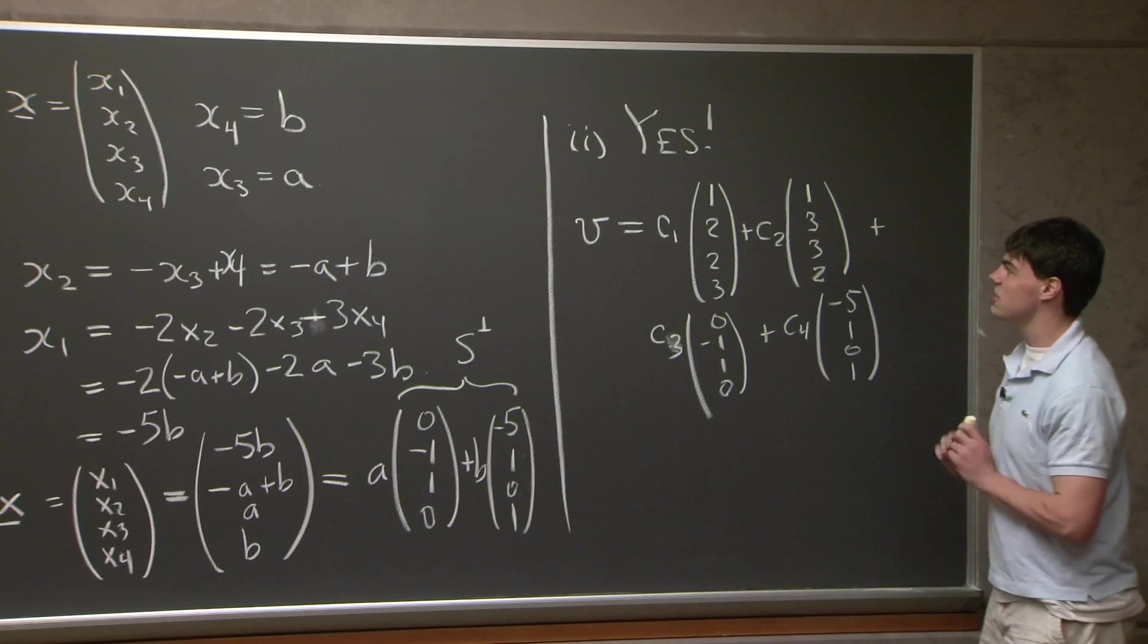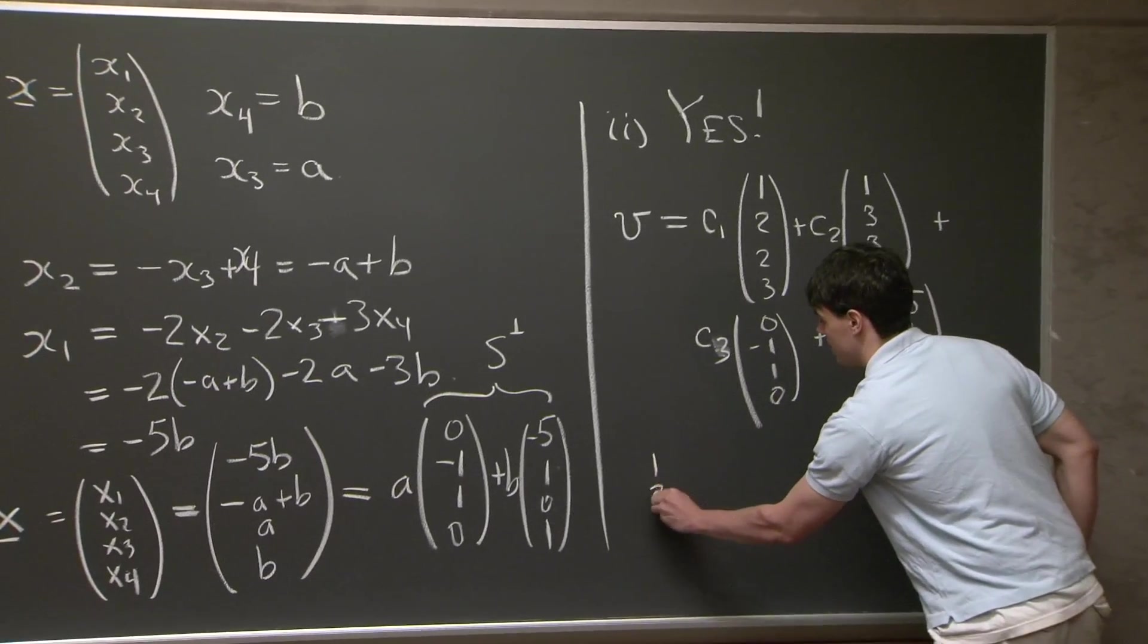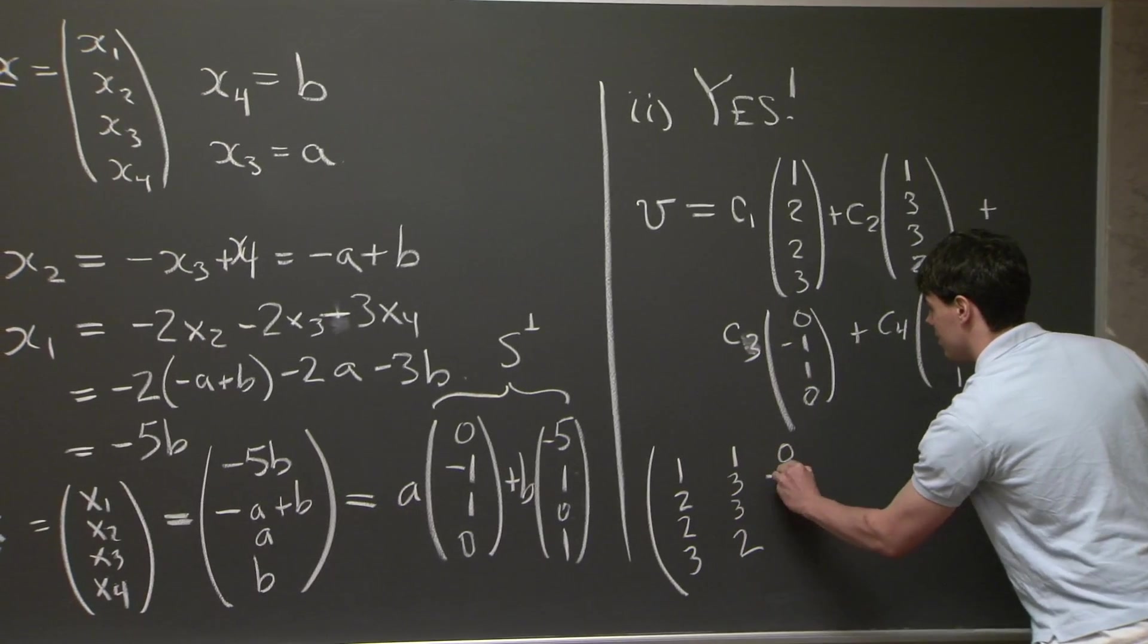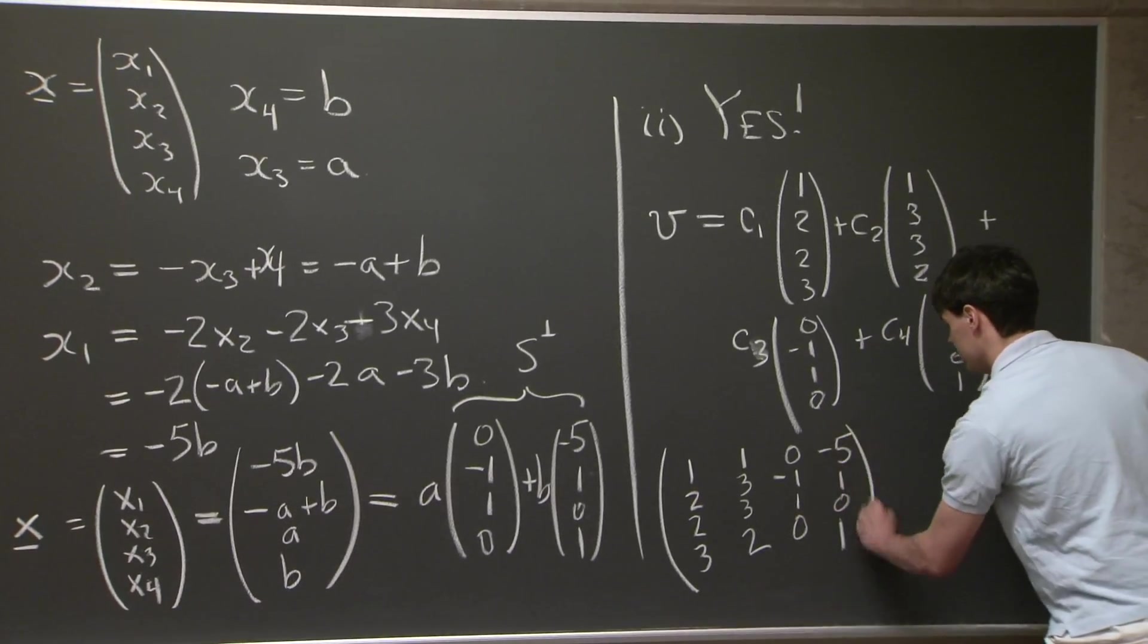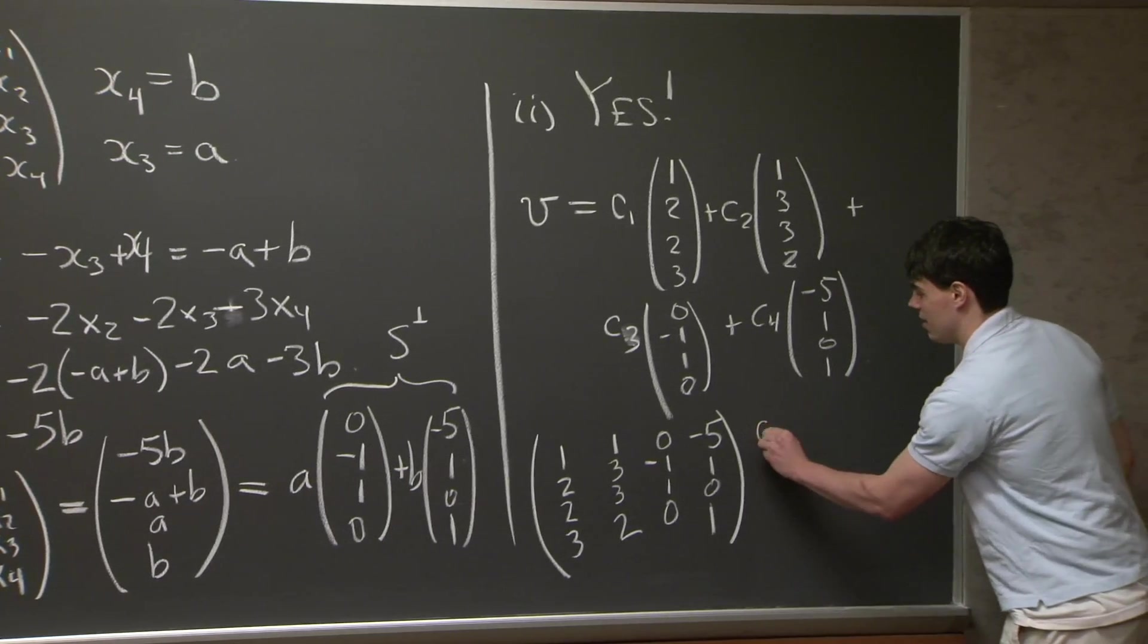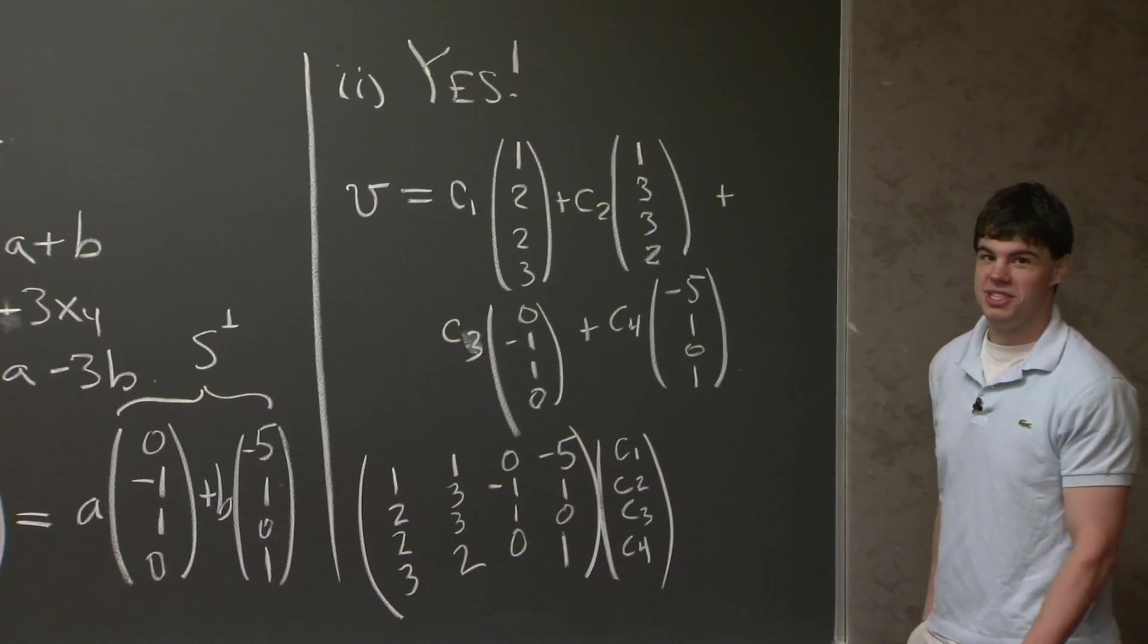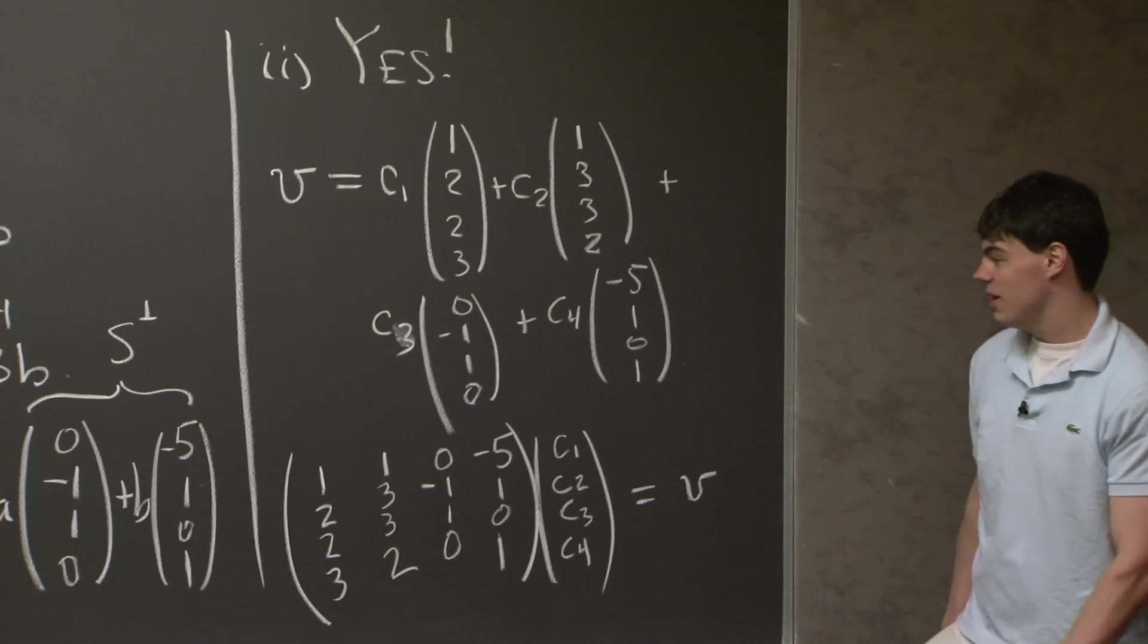Now notice how, just to see why it's yes, what we can do is we can rewrite this in matrix notation. And there's kind of a handy trick. What I can do is I can take these columns and write them as columns of the matrix. And this whole expression is actually equivalent to this matrix multiplied by the constant (c1, c2, c3, c4). And on the right-hand side, we have the vector v.